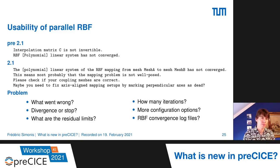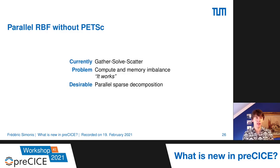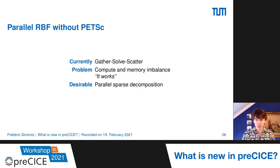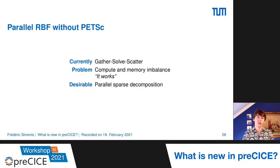As mentioned, we now have a parallel RBF mapping that works without PETSc, using a gather-solve-scatter method. The problem is it's very imbalanced in terms of compute and memory resources — it all runs on a single rank. This is an implementation that works, so you can use it as a reference. The desire would of course be a proper parallel sparse decomposition and parallel solve, which is something we haven't yet planned but would really like to do in the future. So do not completely rely on PETSc for this case.